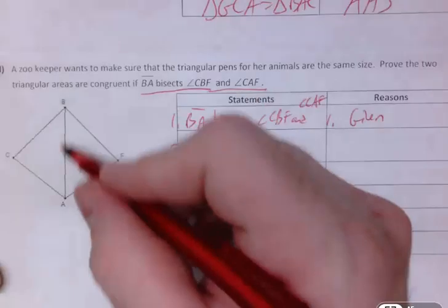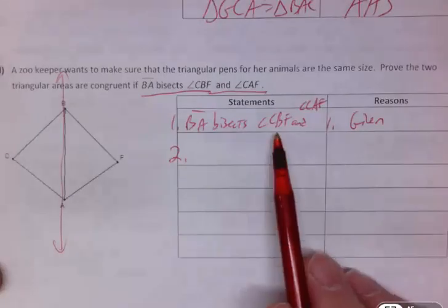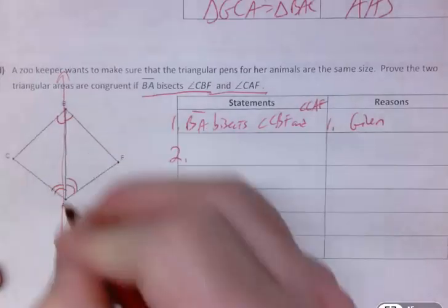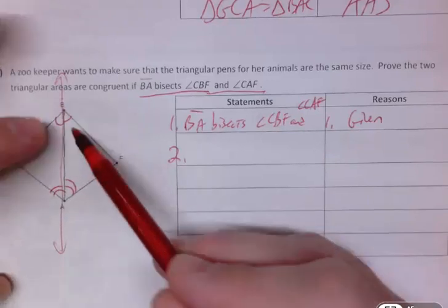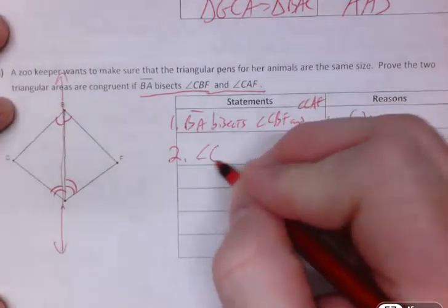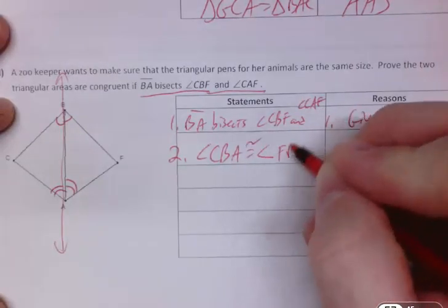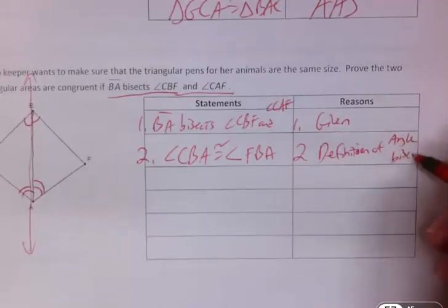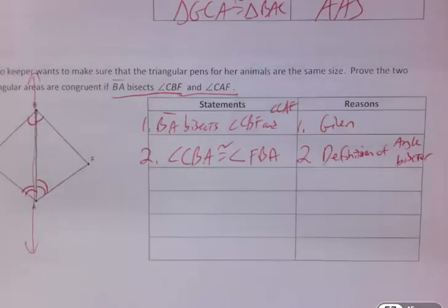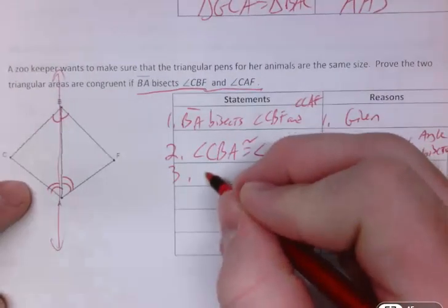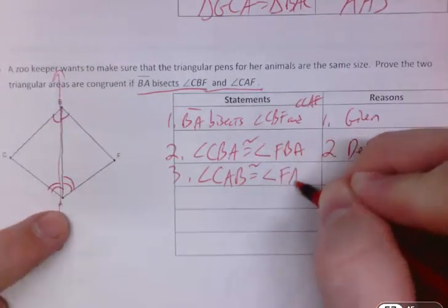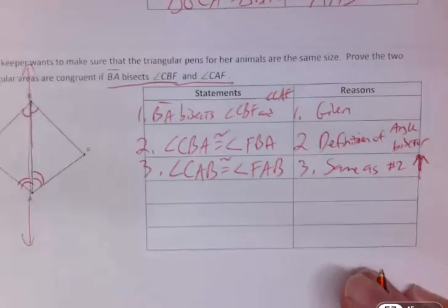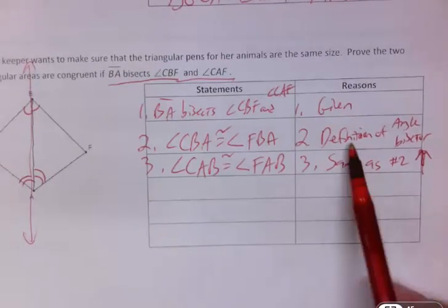And then two, let's use that information. BA is right here, this is BA. This is sort of line BA. And it's cutting angle CBF and angle CAF in half. That means these two little angles have to be the same, and those two little angles have to be the same. When you have an angle bisector, it takes the bigger angle and it cuts it in half, just like it did for segments. So you can actually say angle CBA is congruent to angle FBA, and you would just say by the definition of angle bisector. Okay, this one you can't use midpoint for because that would be for segments. But you can use definition of angle bisector. Similarly, you can say angle CAB is congruent to angle FAB. And it's really the same as number two, definition of angle bisector.